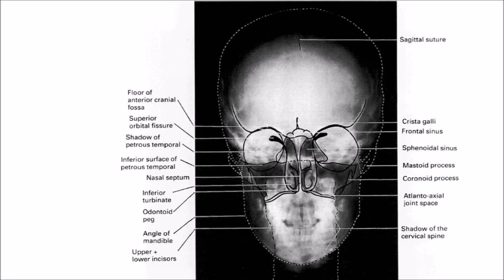In the PA view, we can see the superior orbital fissure, inferior orbital fissure, sphenoid sinus, mastoid process, coronoid process, angle of the mandible, and body of the mandible. These are the main structures visible in the PA view.